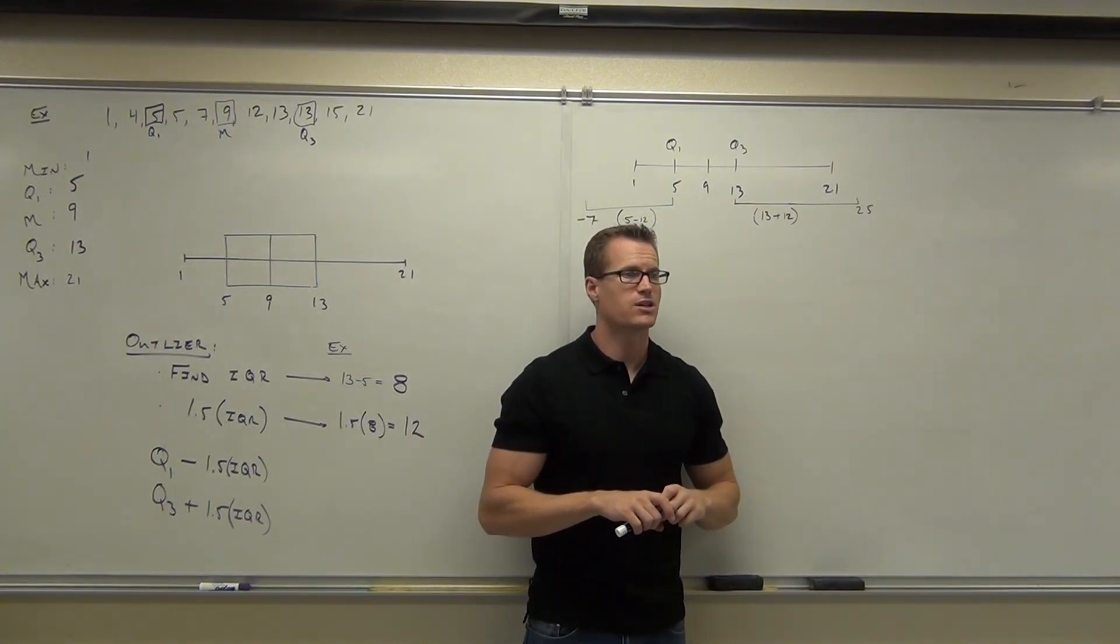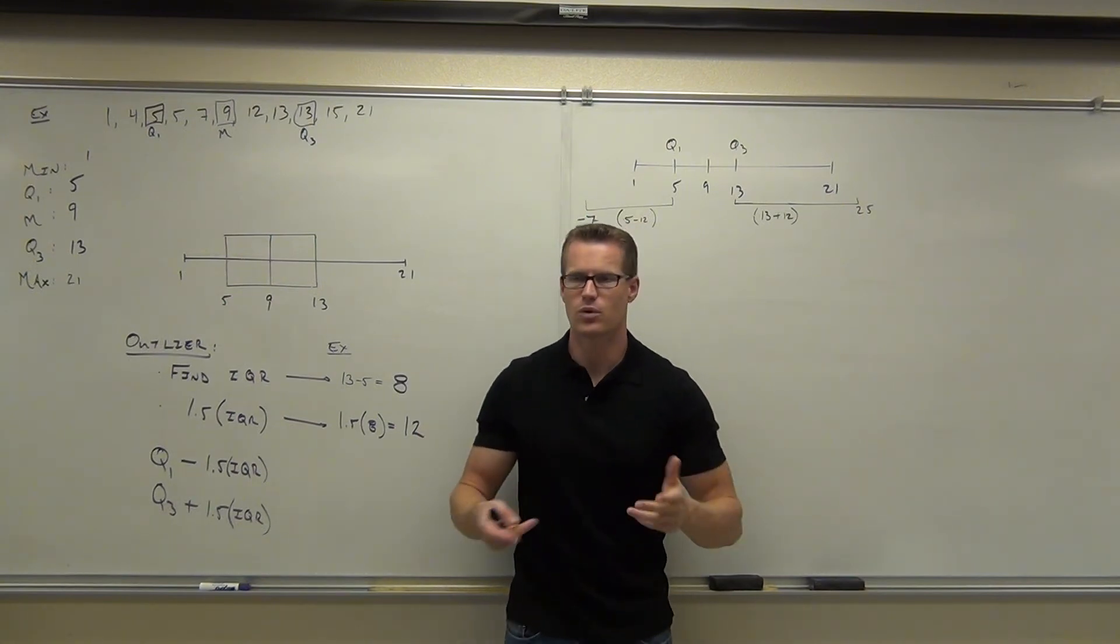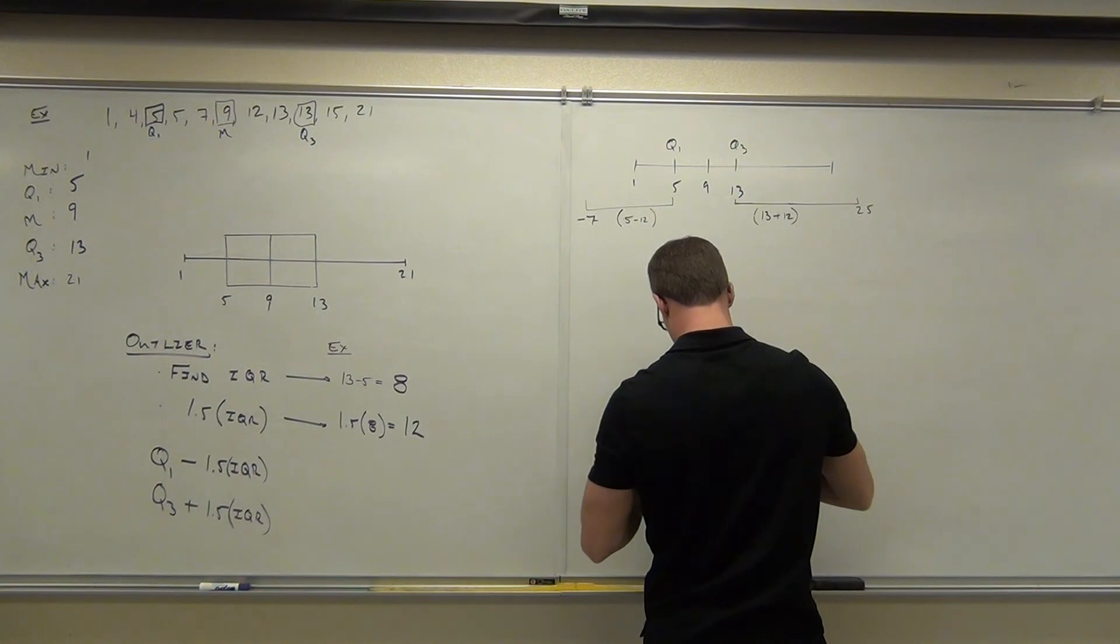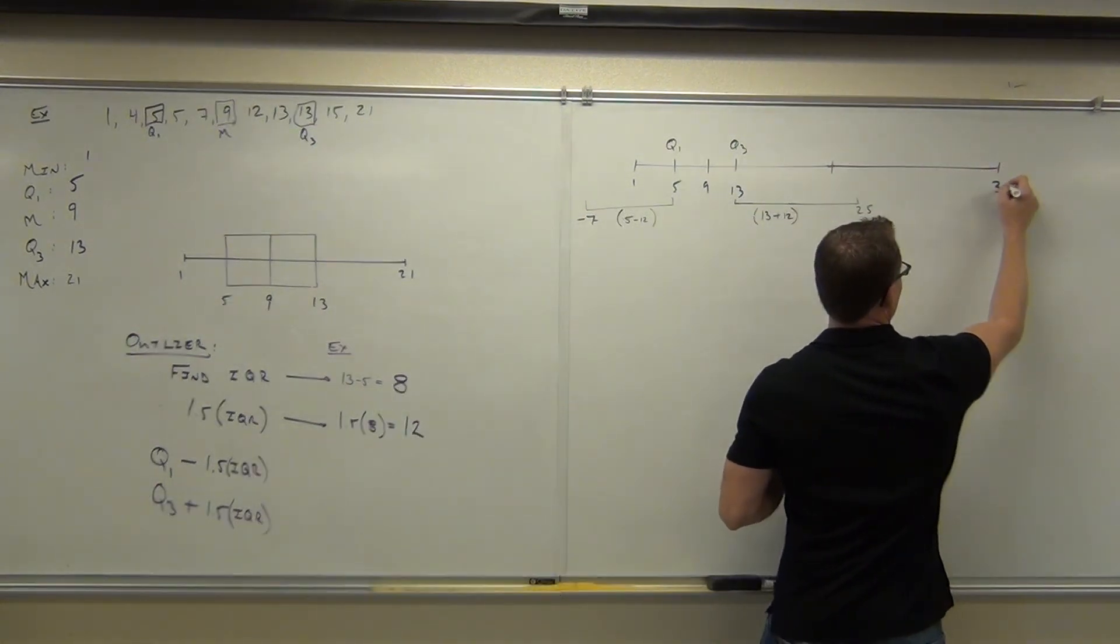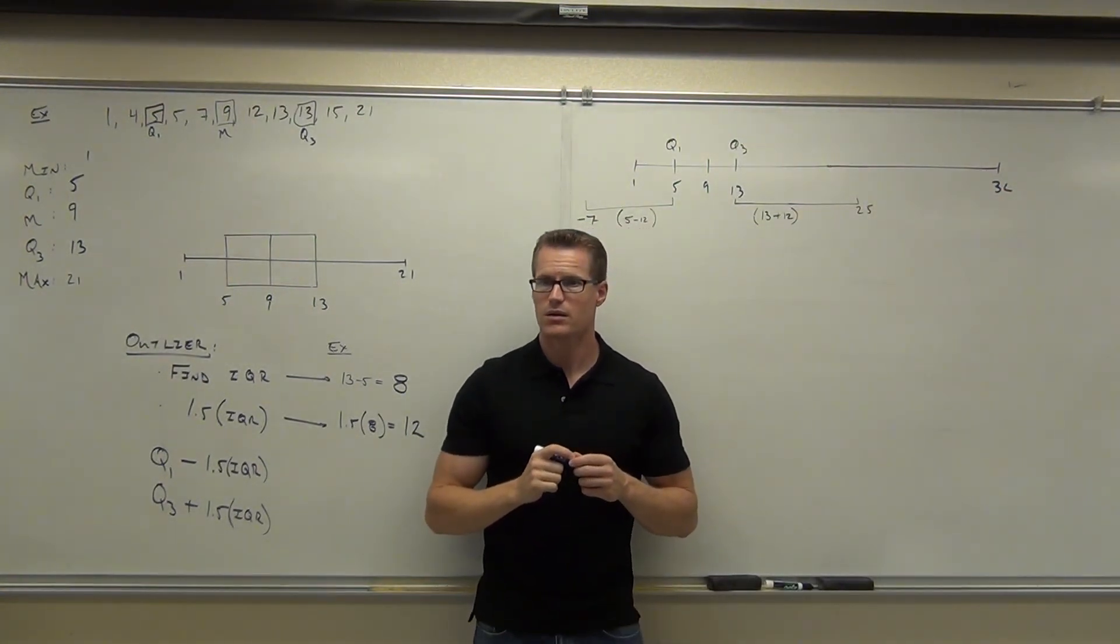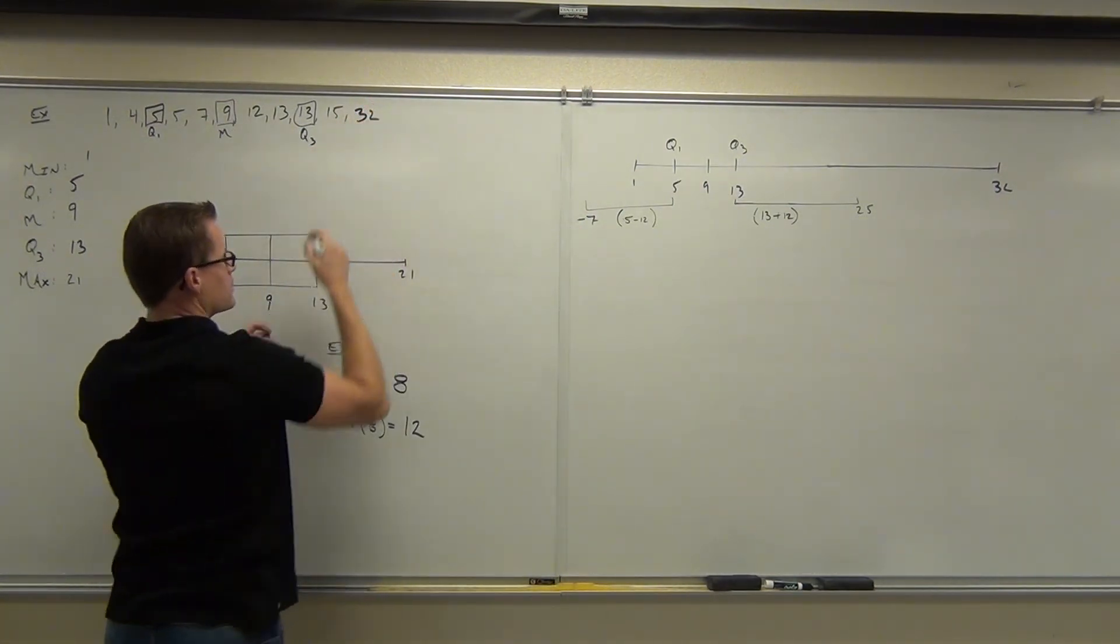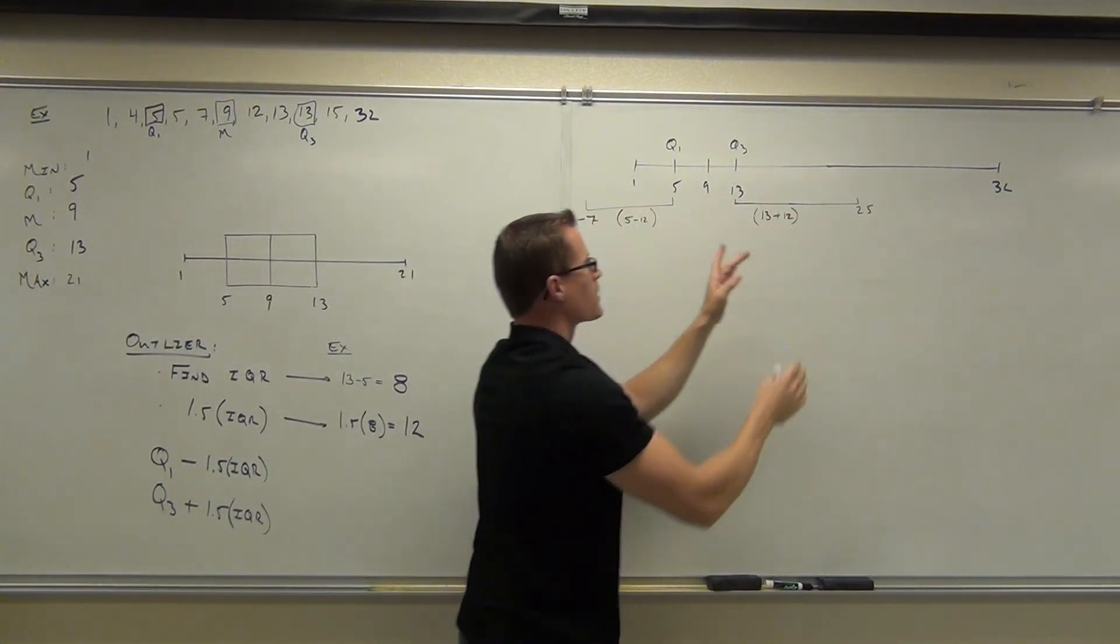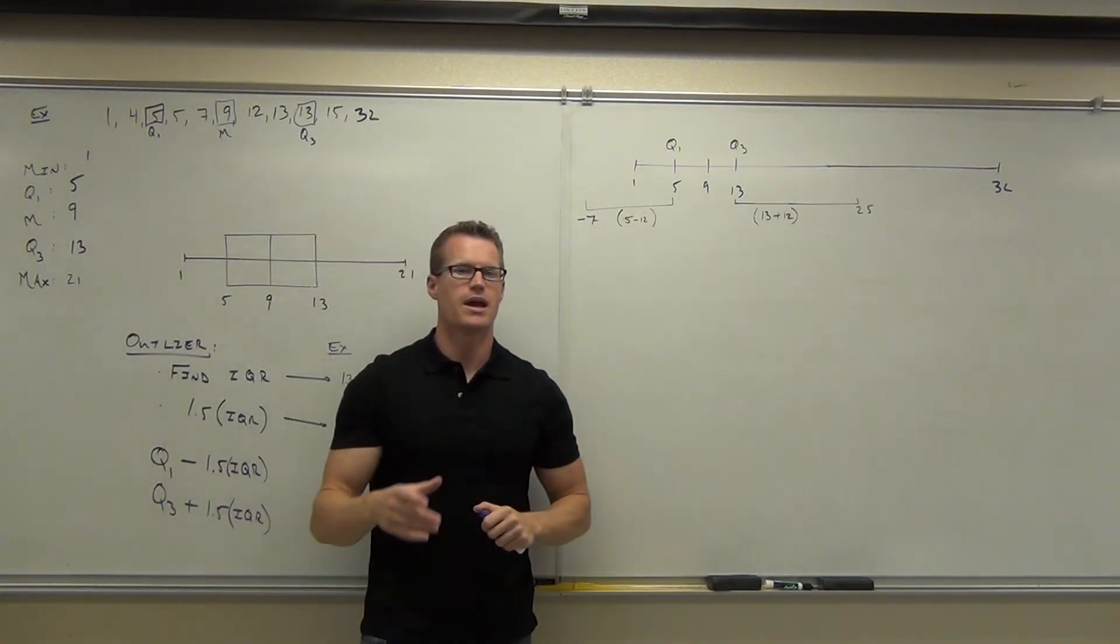Look at what would happen if I change the 21 into something like maybe a 55 or like a 32 or something. So instead of 21, I now have 32. Now do I have an outlier? Yeah. Because you look at this range of numbers, you'd say all these are good. They're within this range of negative 7 to 25. But I would have some numbers outside. Any numbers outside of that range would mathematically be considered an outlier.